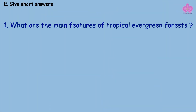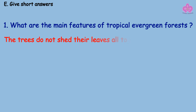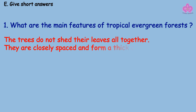Give short answers. Question: What are the main features of tropical evergreen forests? Answer: The trees do not shed their leaves altogether. They are closely spaced and form a thick canopy.